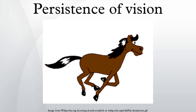Persistence of vision displays: a class of display device described as POV is one that composes an image by displaying one spatial portion at a time in rapid succession. A two-dimensional POV display is often accomplished by means of rapidly moving a single row of LEDs along a linear or circular path. The effect is that the image is perceived as a whole by the viewer as long as the entire path is completed during the visual persistence time of the human eye, often giving the illusion of the image floating in mid-air. A three-dimensional POV display is often constructed using a 2D grid of LEDs which is swept or rotated through a volume.